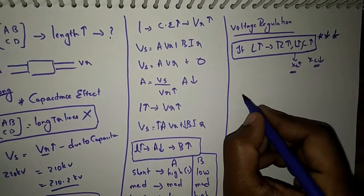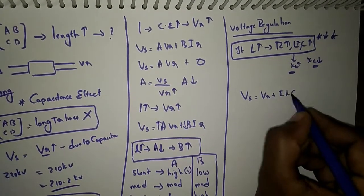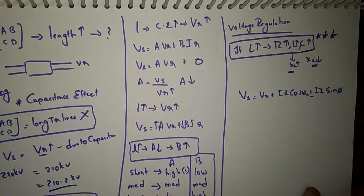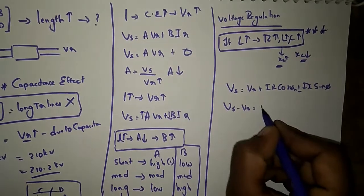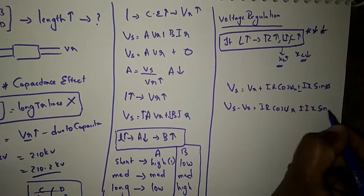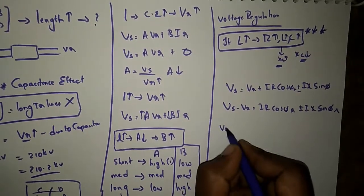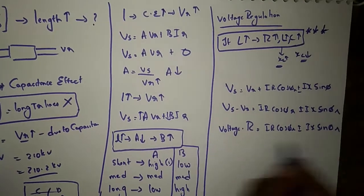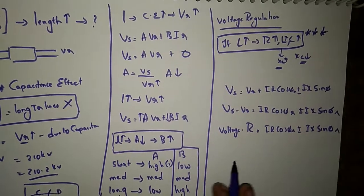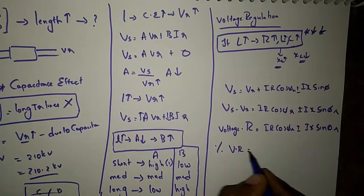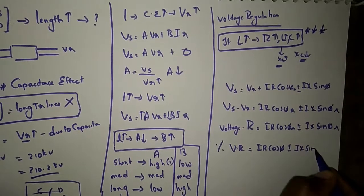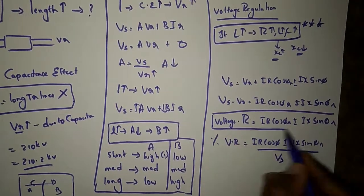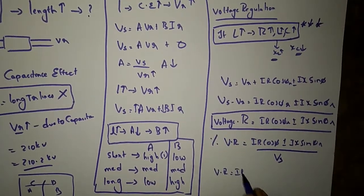Now we move on to voltage regulation. The formula is: VS = VR + IR·cosφR + IX·sinφR. Therefore, VS − VR = IR·cosφR ± IX·sinφR, which is the voltage regulation. For percentage voltage regulation, divide by VS: (IR·cosφR ± IX·sinφR) / VS. Use the minus sign for a capacitive load and the plus sign for an inductive load.